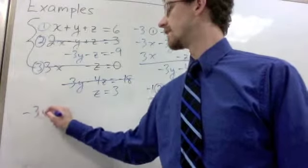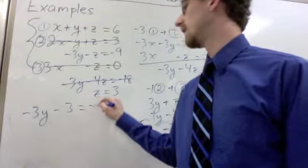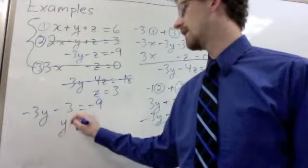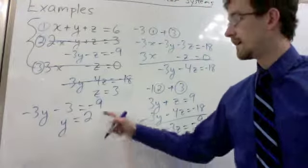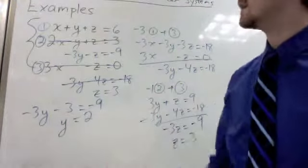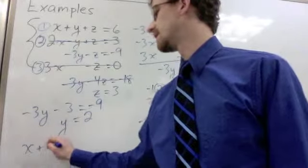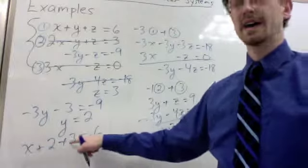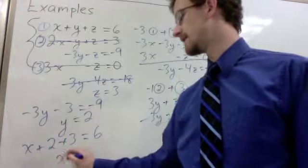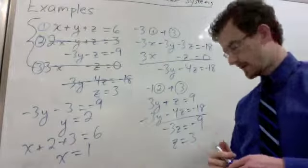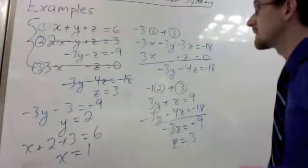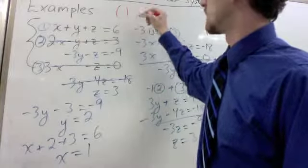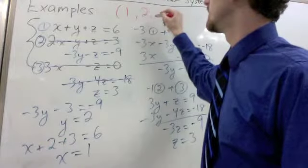From there, we can back substitute to solve the rest of our system. Z equals 3, so equation 2 gives us negative 3y minus 3 equals negative 9. Add 3 to get negative 6. Divide by negative 3 to get y equals 2. And then plug both of those into equation 1 to solve for x. x plus 2 plus 3 equals 6. 2 plus 3 is 5, subtract that over. 6 minus 5 gets us x equals 1.